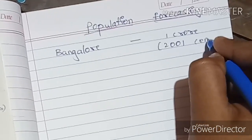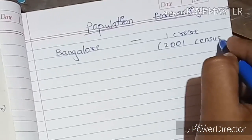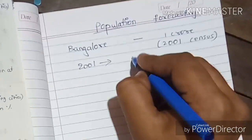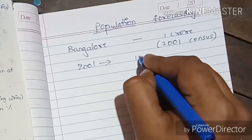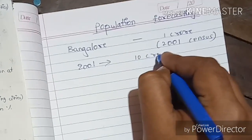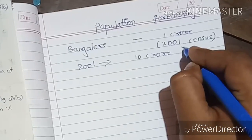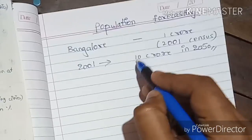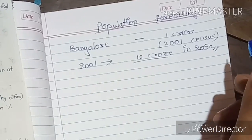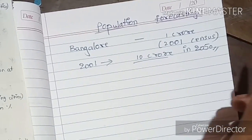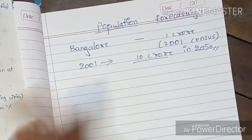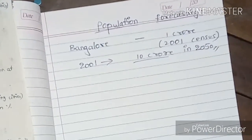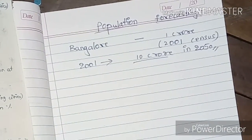According to the 2001 census, they predicted the population of Bangalore city to be around 10 crores in 2050. This type of future prediction of a city's population is possible by using population forecasting methods. So here we will be looking at various population forecasting methods.